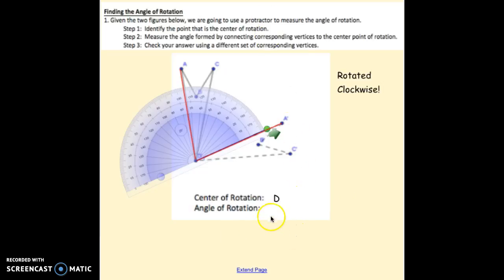As we discussed, that reading should be around 76 degrees. And since this was rotating clockwise, that would be a rotation of negative 76 degrees.